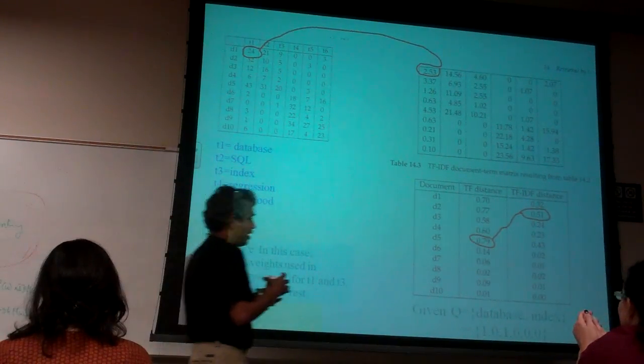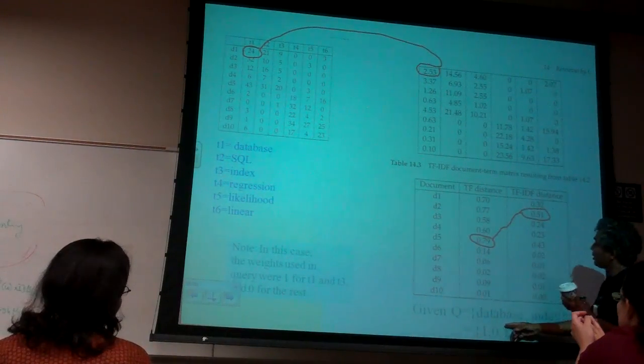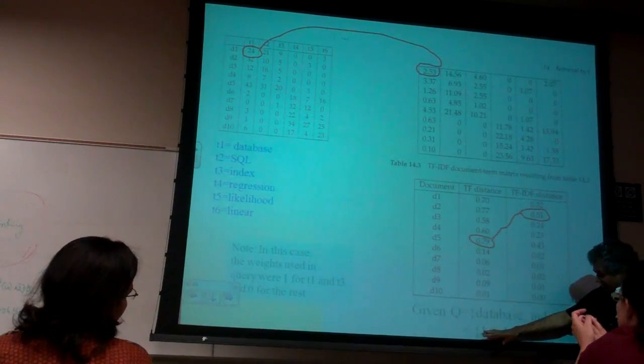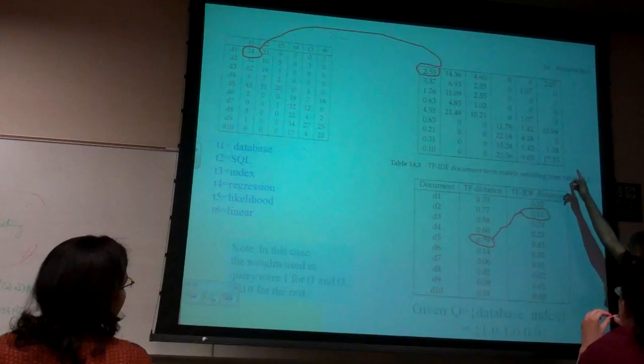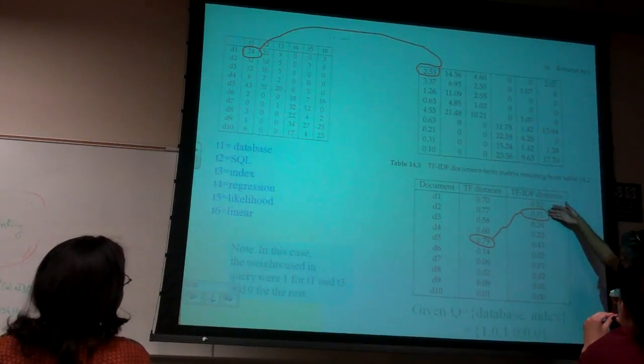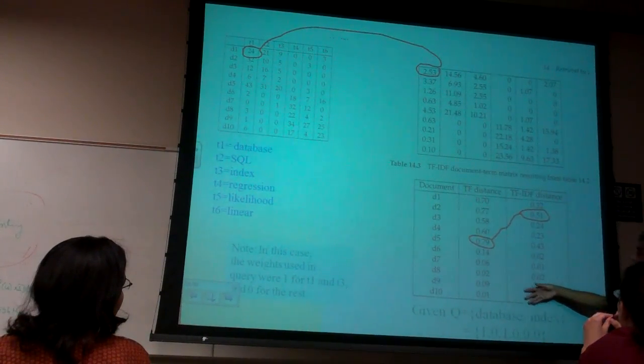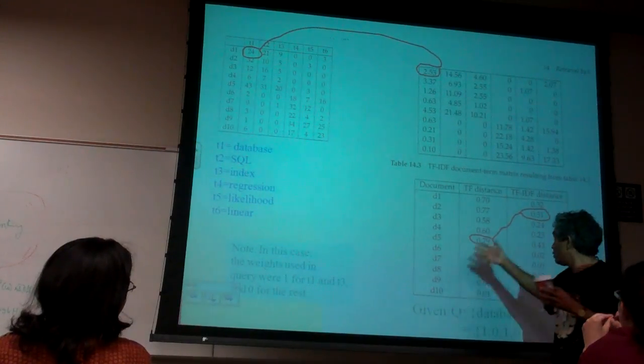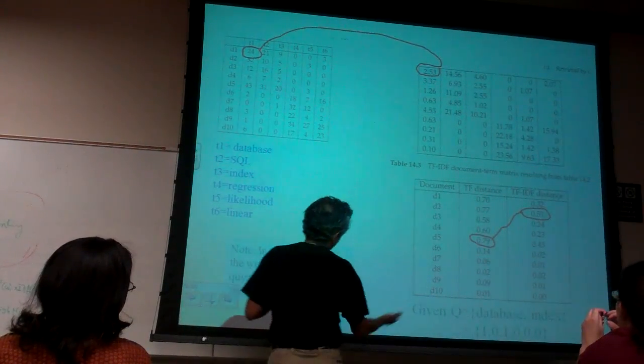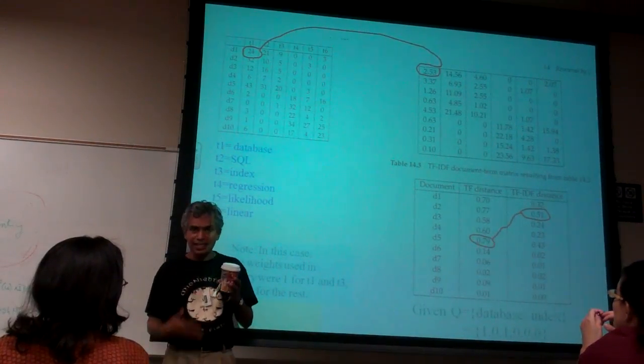And so if I have this query, then I can compute the distance between this vector, cosine theta distance between this vector and each of those vectors. And that is represented as the TF-IDF distance. And this was the TF distance. I'm just giving it to you to see whether you can compare and see that one is any better than the other.